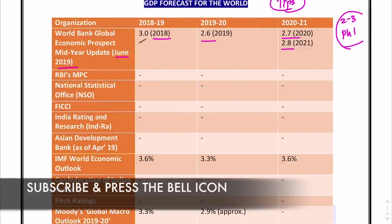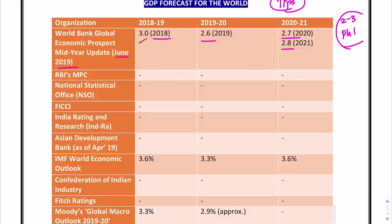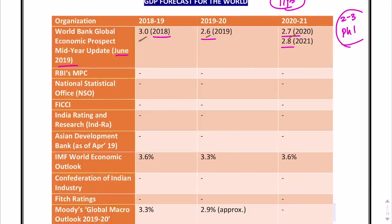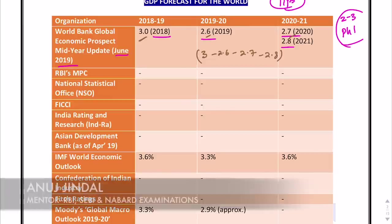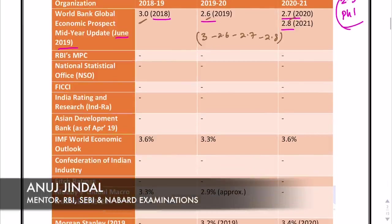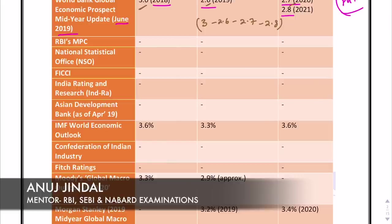So the forecast given by the World Bank is 3% for 2018-19, 2.6% for 2019-20, 2.7%, and 2.8%. The sequence is 3, 2.6, 2.7, 2.8.